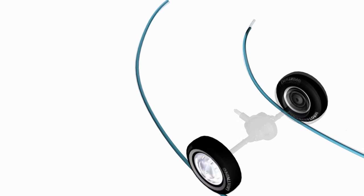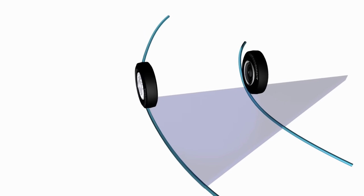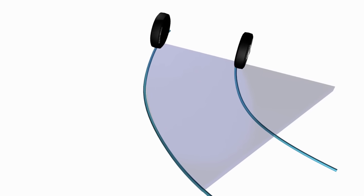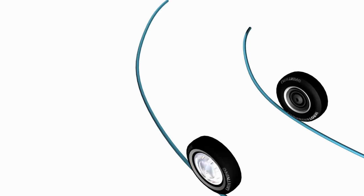Consider these wheels which are negotiating a turn. It is clear that the left wheel has to travel more distance compared to the right wheel, which means the left wheel has to rotate at a higher speed. If these wheels were connected using a solid shaft as shown, the wheels would have to slip to accomplish the turn.